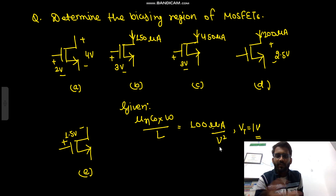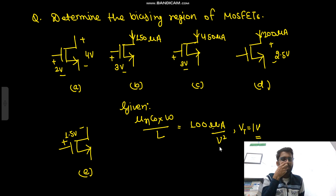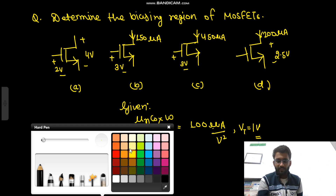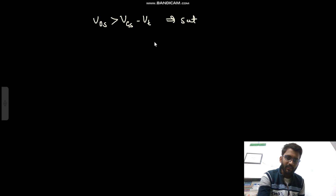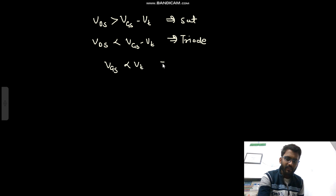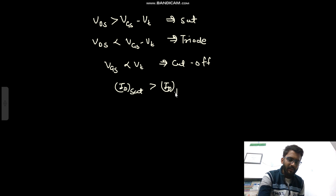Hello everyone. Today we will see a conceptual question on MOSFET biasing. You need to find the region of operation of all the MOSFETs, and you have been given mu_n*Cox*(W/L) value and Vt value. The basics you need to know: if VDS is greater than VGS minus Vt, it is in saturation. If VDS is less than VGS minus Vt, it is in triode. If VGS is less than Vt, it is in cutoff.